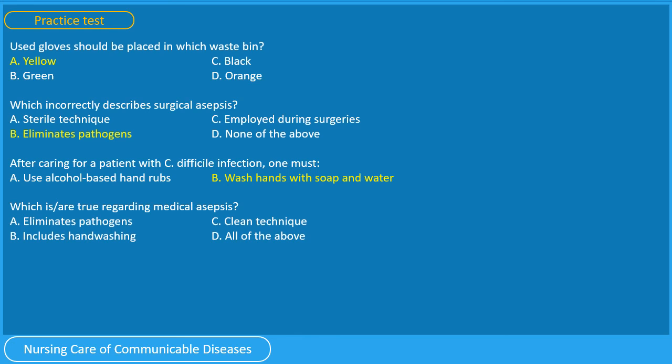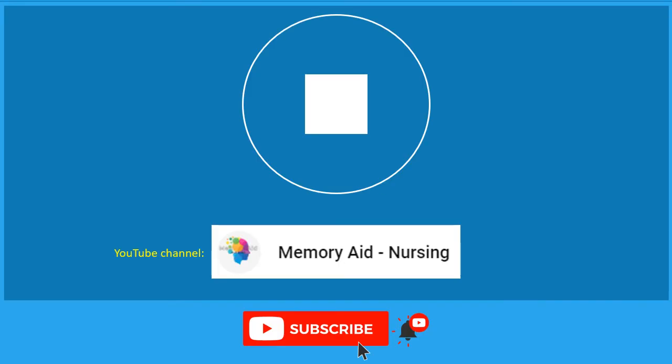For the last question: Which is or are true regarding medical asepsis? A. Eliminates pathogens, B. Includes hand washing, C. Clean technique, or D. All of the above. You have 5 seconds. The correct answer is D, all of the above. If you got all 4 questions correctly, then you did a great job. If not, rewind this video to check your answers. This ends the slide set for the lecture on asepsis. Please do not forget to subscribe to my YouTube channel, MemoryAid-Nursing. Thank you!